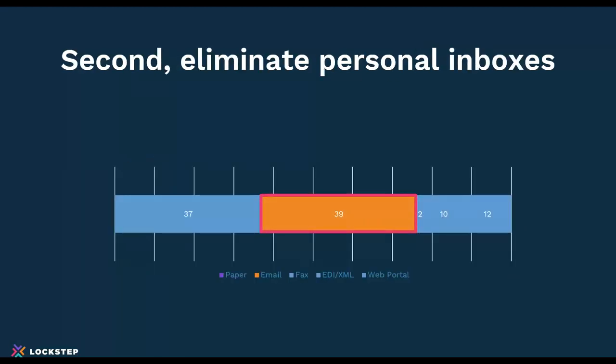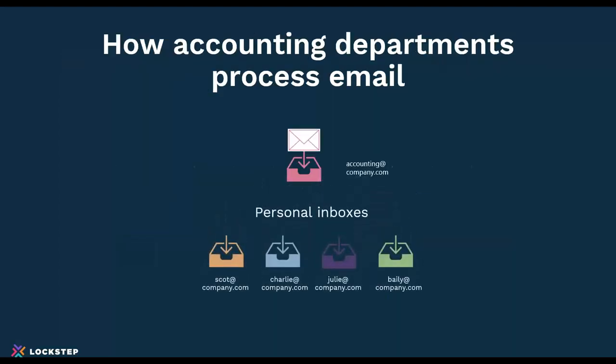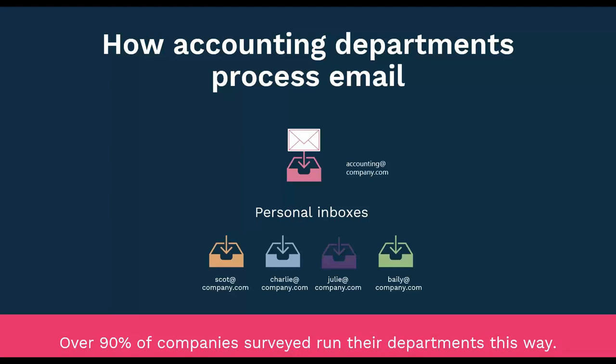The second thing to look at is eliminating the use of personal inboxes. About 40% of these communications going back and forth for invoicing are happening in email. In most accounting departments today, there will be some generic address for accounts receivable — something like accounting@company.com or accountspayable@company.com — usually either a shared inbox or distribution list. What happens then is the AP personnel take it out of the shared inbox and bring it into their own personal inbox and start working through it and replying from their own personal inboxes. Over 90% of companies we've surveyed run their departments this way.